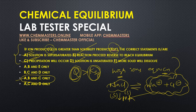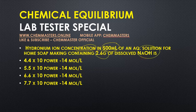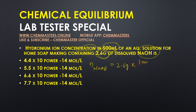Right now, look at the second question: hydronium ion concentration in 500 mL of an aqueous solution containing 2.6 grams of dissolved sodium hydroxide. First, we need to find the number of moles of NaOH. The number of moles of NaOH equals 2.6 grams divided by the molar mass of NaOH, which is 40, giving 0.065 moles.